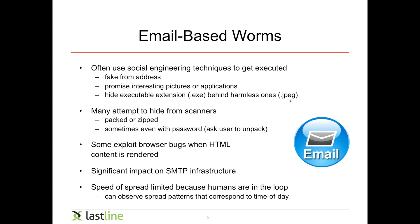Often executable extensions like .exe are hidden behind harmless ones like .jpeg. Another classic thing we often see is the attempt to hide from scanners. The attachment — the malicious document or the malicious picture — might be packed or zipped. The idea is that if you compress it, some scanners will fail to extract it. A recent trick is to zip it with a password and socially engineer the user to unpack it, type the password for that zip file, extract that malicious executable, and then click on it and execute it.